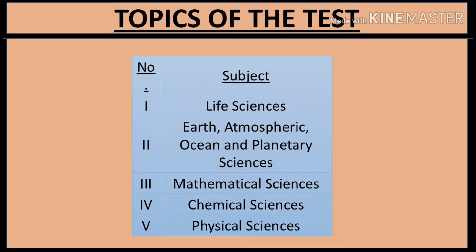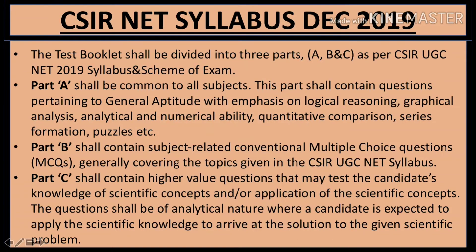Now let's look at the topics of the test by subject. The subjects you need to prepare for are: first, Life Sciences; second, Earth, Atmospheric, Ocean and Planetary Sciences; third, Mathematical Sciences; fourth, Chemical Sciences; and fifth, Physical Sciences. These are the five subjects available in the CSIR UGC NET exam.